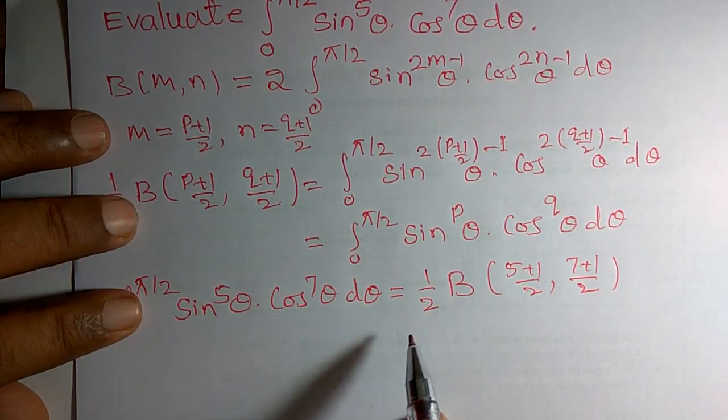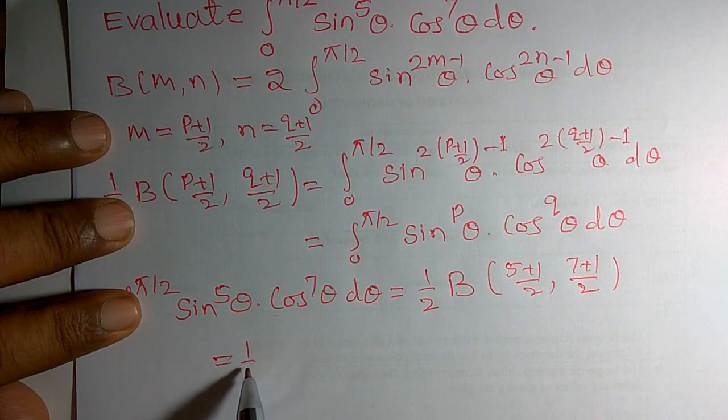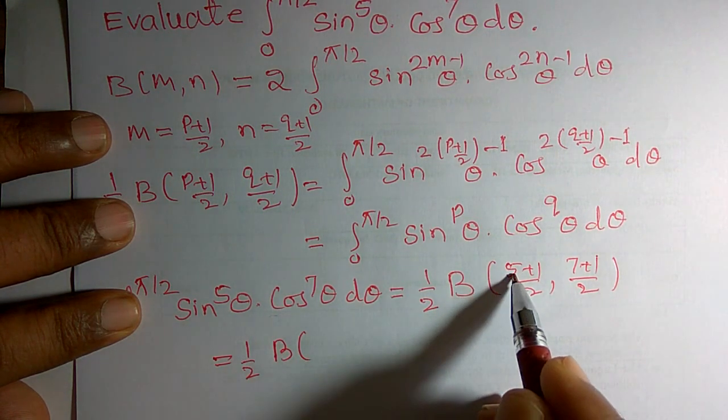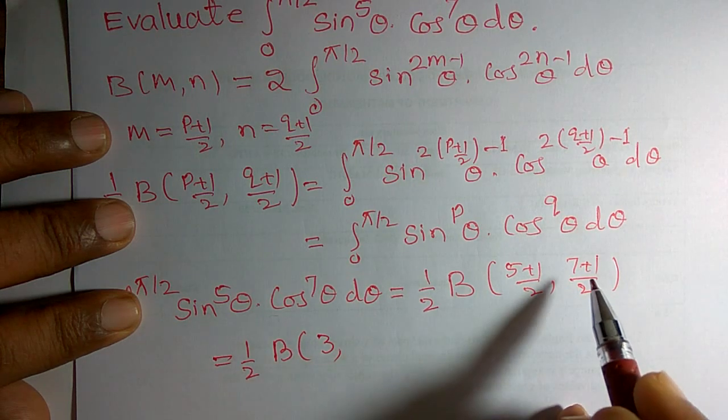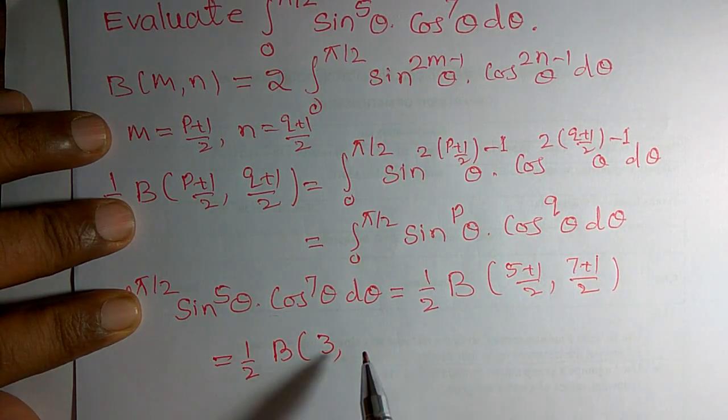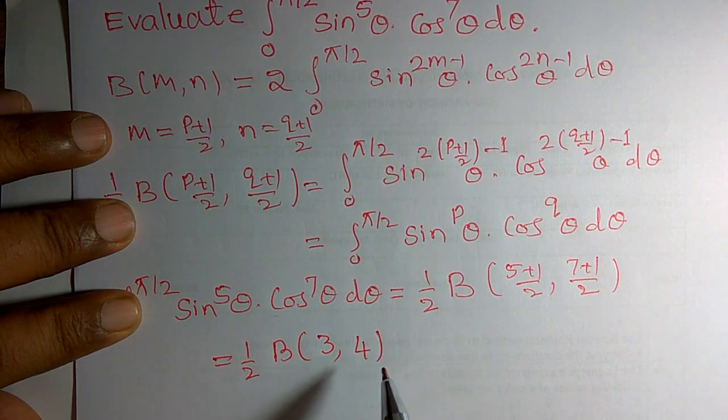I can simplify. This can be written as 1 by 2 times B of 5 plus 1, 6 divided by 2, it means 3. 7 plus 1, 8 divided by 2, it means 4.